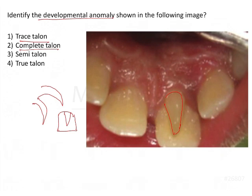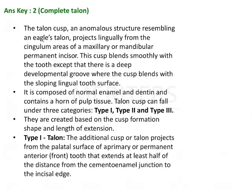A talon is present primarily on the incisors — central incisors more often than lateral incisors — and more on the palatal surface than on the buccal surface. However, there are case reports of it occurring on the buccal surface as well. The answer here is a complete talon, which is composed of normal enamel and dentine and contains a horn of pulp tissue.